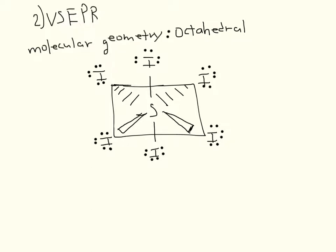Now that we have determined the electron geometry, we can determine the molecular geometry and draw the VSEPR. We determined that the electron geometry was octahedral. We know that there are no lone pairs, and what would change the molecular geometry would be if a lone pair was present. Since there are no lone pairs, the molecular geometry stays the same as octahedral.